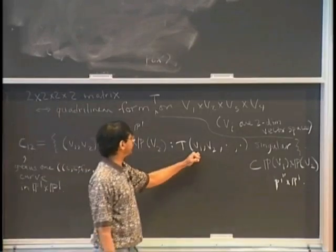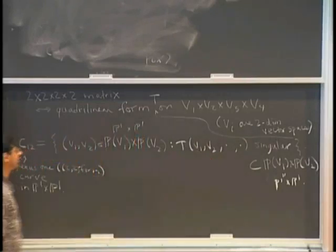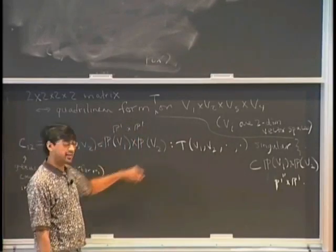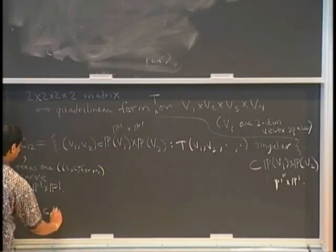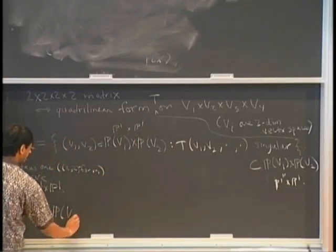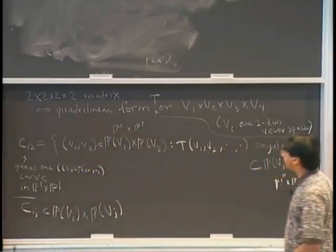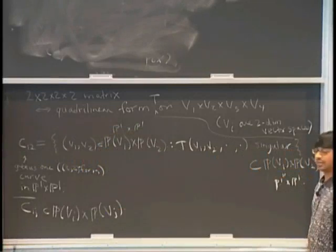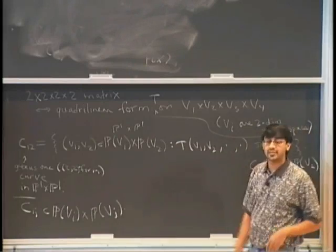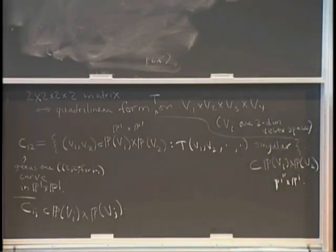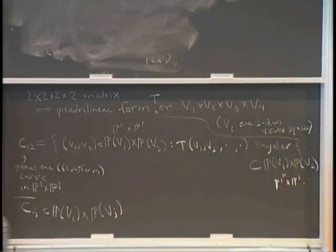But this genus 1 curve came from choosing these first two coordinates. We could have chosen any two coordinates, and that would have given different genus 1 curves in PV_i cross PV_j. So in general you get a C_{ij} in PV_i cross PV_j. You end up with 4-choose-2 equals 6 genus 1 curves, in the various PV_i cross PV_j's. So that's a way of taking a hypercube and producing six genus 1 curves in P1 cross P1.